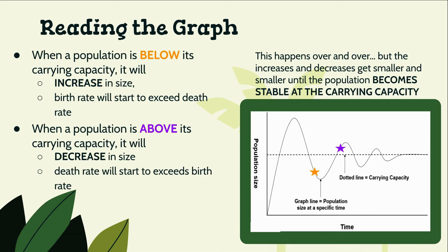When reading these graphs, there are a couple of important things to keep in mind. When a population is below its carrying capacity, we can expect to see an increase in size — birth rate will exceed death rate, with more organisms being born than dying. When the population is above its carrying capacity, the population must start decreasing in size, so death rate will exceed birth rate. This will continue until increases become smaller and we reach a stable carrying capacity.